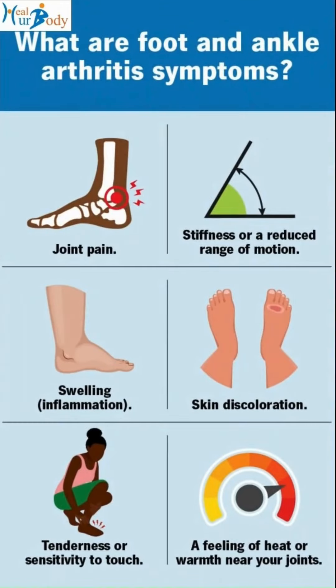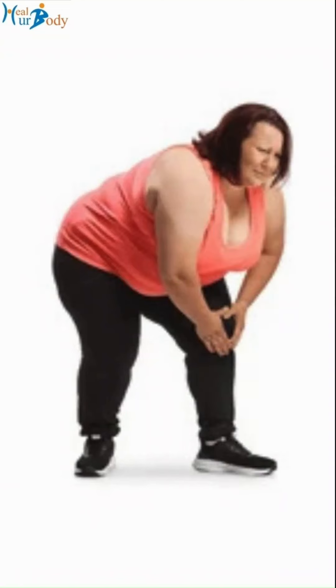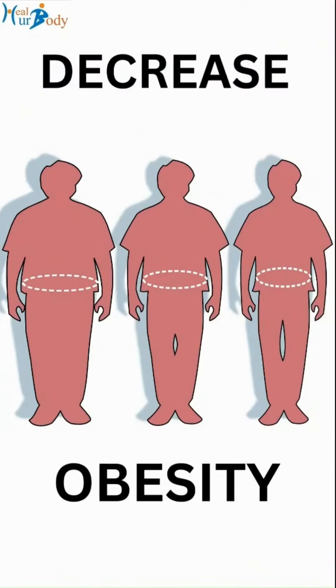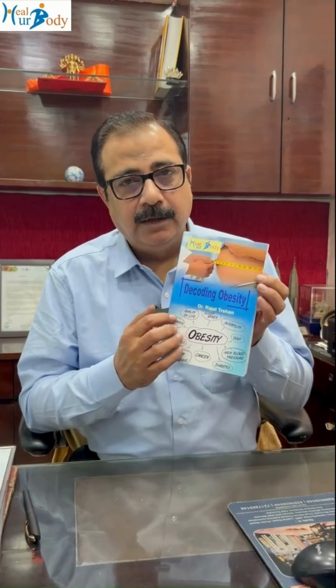I have told you that arthritis has a reason. What is arthritis? I have told you that it is obesity — motapa — in which you have got a footnote on your body. In this book, if you want to reduce obesity in your home, decoding obesity, I have told you all this.